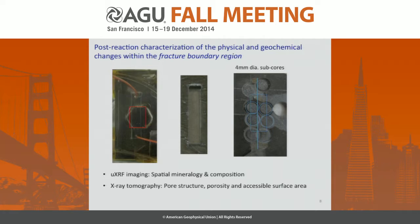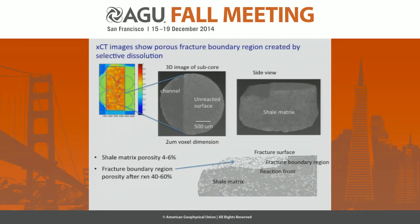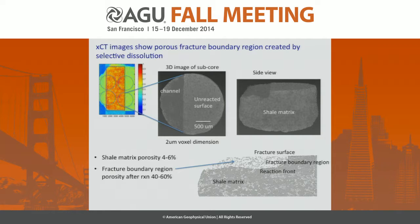We take the top off afterwards and do some micro XRF imaging of this channel and also look at X-ray tomography. The X-ray tomography results, a sample of which are shown here, are from sub-cores of the channels. Here you can see a top-down view of the unreacted surface, and here is the channel. What you see is that what's left behind is a kind of porous network. The fracture surface has actually been maintained, and the reaction front can be seen within the boundary. We've seen that the fracture boundary region has increased from a matrix porosity of 4 to 6 percent up to 40 to 60 percent.